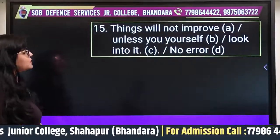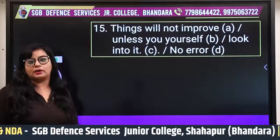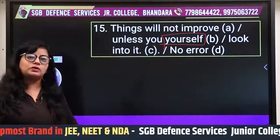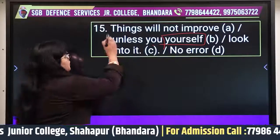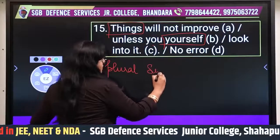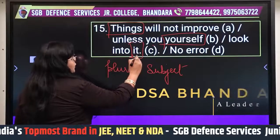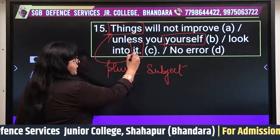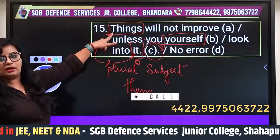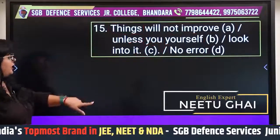Question fifteen: 'Things will not improve unless you yourself look into it.' 'You yourself' is a reflexive pronoun — that is correct, and you will learn more about it in the pronoun topic. But 'things' is plural — it is the subject. The pronoun 'it' refers back to 'things,' but 'it' is singular while 'things' is plural. So the pronoun should be 'them,' not 'it.' The error is in part C.